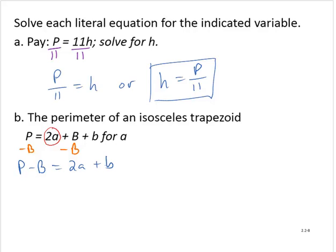I have not isolated the variable term. Notice the variable term is 2a, and I still have that lowercase b associated with it. So let me subtract b from both sides, lowercase b that is. P subtract capital B subtract lowercase b, no like terms, so I'll just leave it as P subtract capital B subtract lowercase b equals 2a.